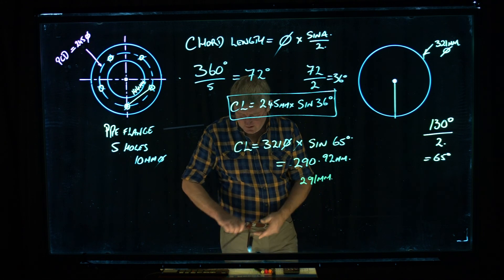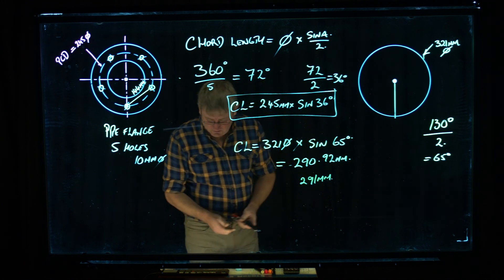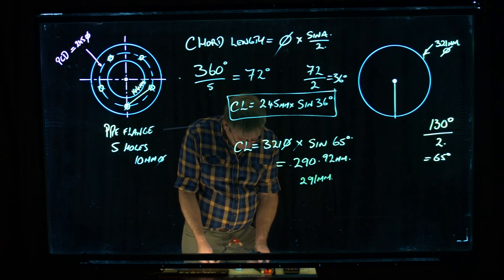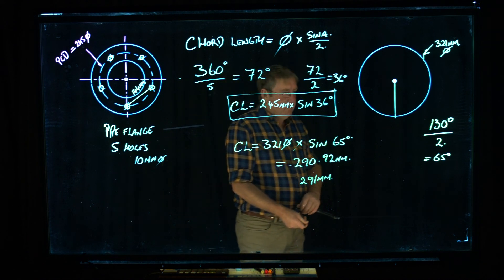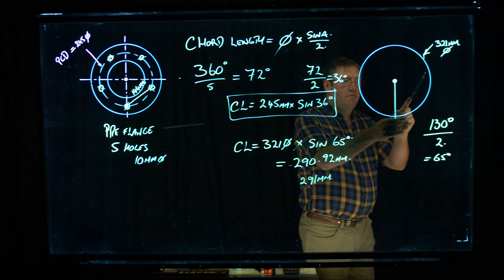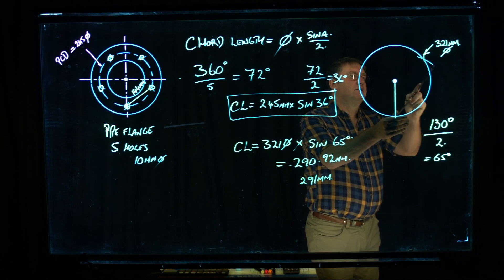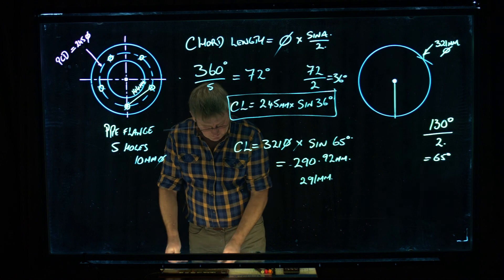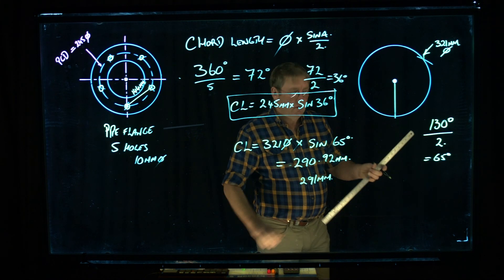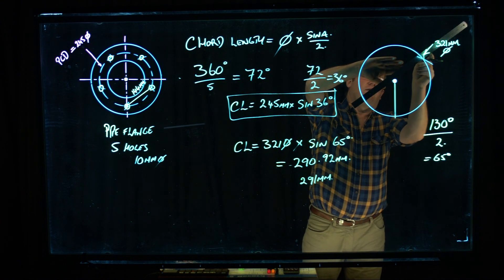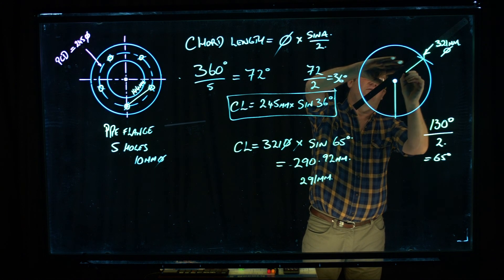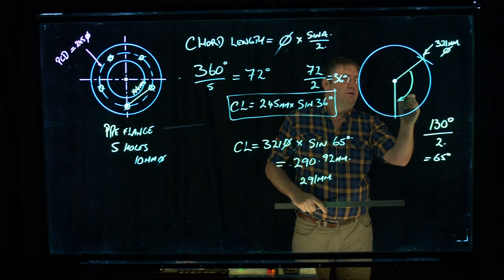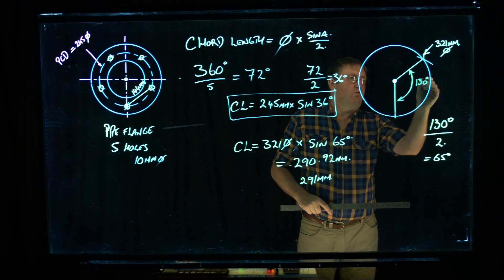So if I set my compass to 291 on my stainless steel roll that I've got here, 291. So I'm going to put it onto the board here, it's giving me that point there, put that on there, and taking my line back to my center. This portion here is going to be 130 degrees.